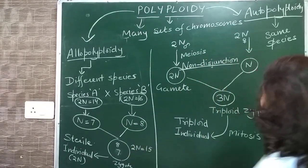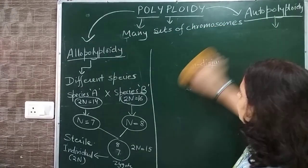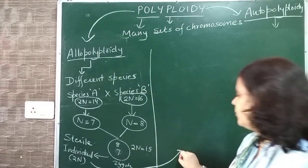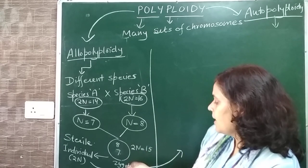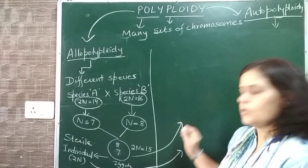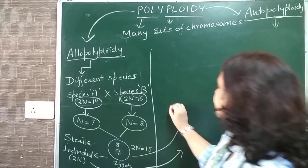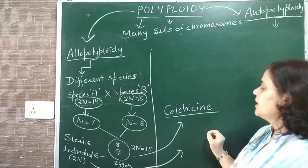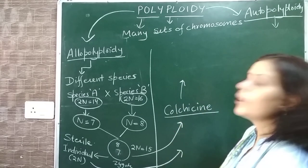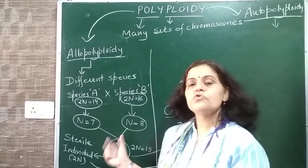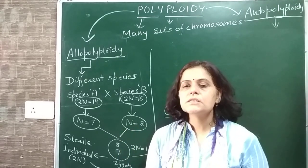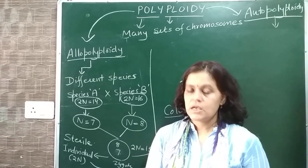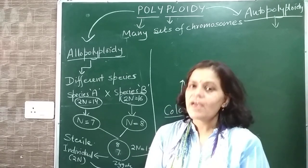So what did scientists do? They decided to make a polyploid from this sterile hybrid. Actually, this zygote - before it develops - is treated with colchicine. Colchicine is a drug obtained from a plant. What does this drug do? It causes polyploidy to form. This drug does not allow the formation of spindle fibres - it prevents microtubules from aggregating to form spindle fibres.